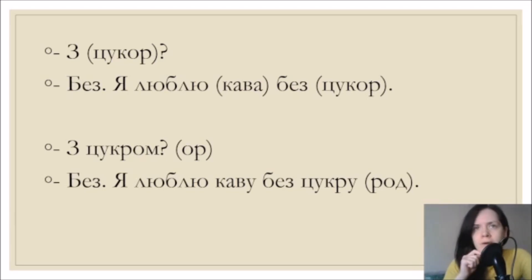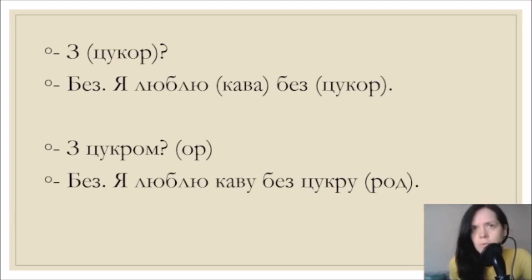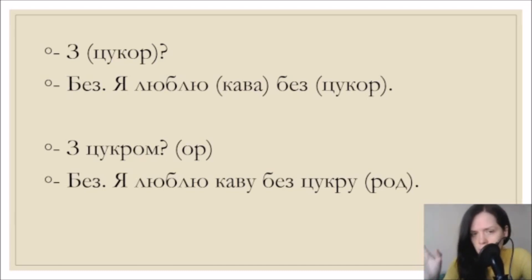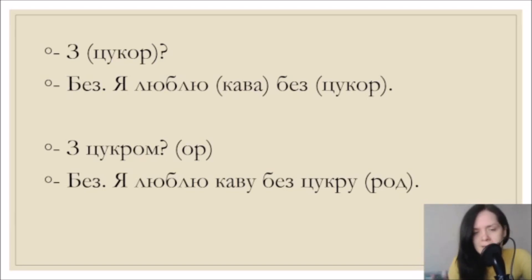In Ukrainian, after the preposition з when we translate it as 'with something,' we use the noun in instrumental case: з цукром - with sugar, з молоком - with milk, з водою - with water. But with the preposition без meaning 'without,' we use genitive case: без цукру, без води, без снігу, без тепла, без розуміння, без проблем - all genitive case.